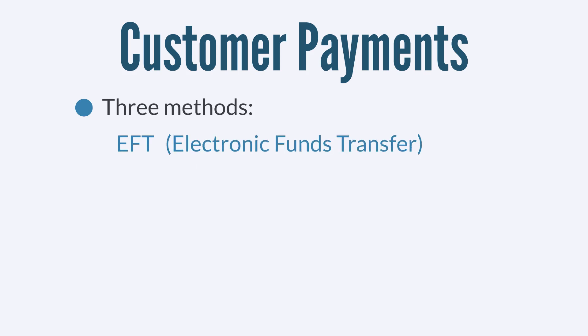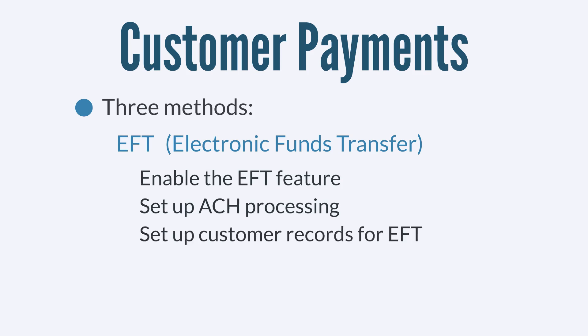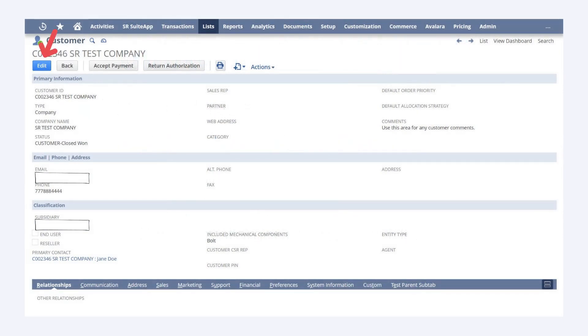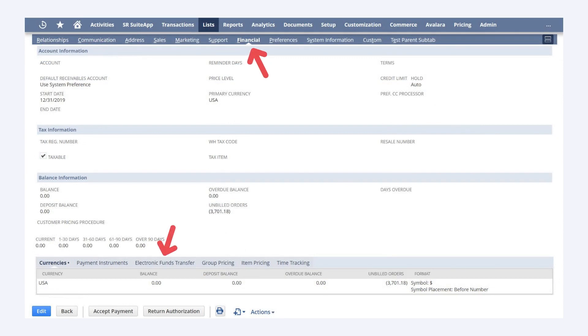To use EFT — electronic funds transfer — you would need to enable the feature, set up ACH processing, and set up customer records for EFT payments. Note that EFT transactions are processed through the ACH network, but ACH is not the actual payment method as it is for vendor payments. It's important to understand that while ACH is a common way to process electronic payments, it is primarily used in the United States; other countries use different platforms. To set up customer records for ACH payments, edit the desired customer record and enter that customer's bank account information under the sub-tab Financial Electronic Funds Transfer.